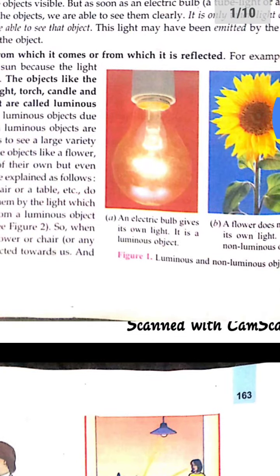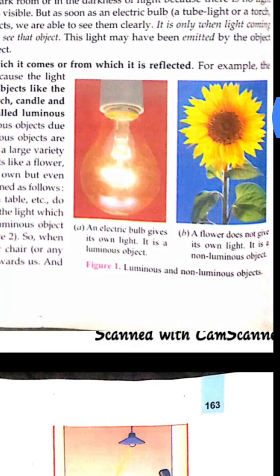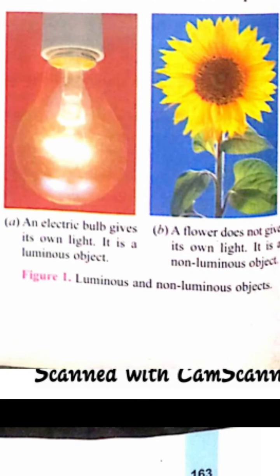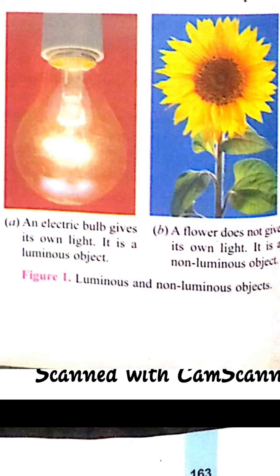From the figure we can see there are two examples: first one is the electric bulb and the second one is a flower. Which one is the luminous object and which one is non-luminous? The electric bulb emits its own light, so it is a luminous object. The flower is not able to emit its own light, but it is able to be seen with the help of a source of light — when light falls on the flower we are able to see it.